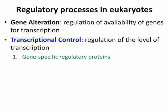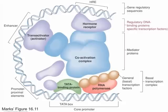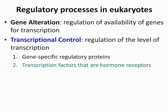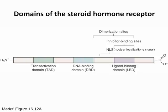Transcriptional control is regulation at the level of transcription. The first topic is gene-specific regulatory proteins, also known as specific transcription factors — seen in pink as regulatory DNA binding proteins. They can be either activators or repressors, and they interact with the general transcription factors discussed in the last exam. Some of these specific transcription factors can be hormone receptors, such as steroid hormones.